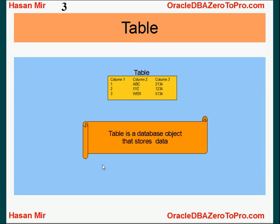First of all, what's a table? A table is a database object that stores data. Here's an example of a table. A table has columns, and a table has rows, and we have values at each cell in the table. This is just a visual representation of a table.